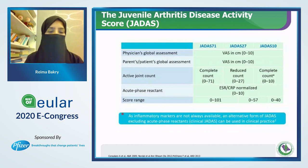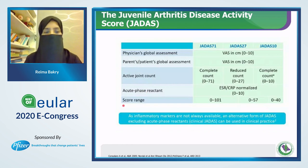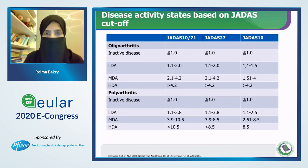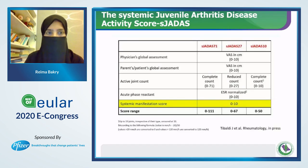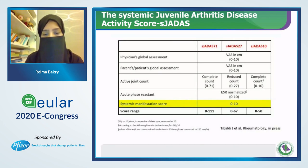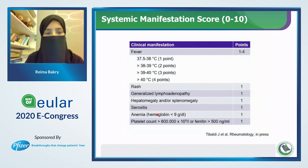The JADAS tool includes the physician global assessment, parent and patient global assessment, active joint count, and acute phase reactant with a score range. We also have the clinical JADAS, which excludes inflammatory markers. We have the systemic JADAS that added a fifth value — the systemic manifestation score — scored upon presentation including fever, rash, lymphadenopathy, hepatomegaly, serositis, anemia, and platelet count.